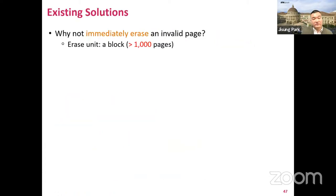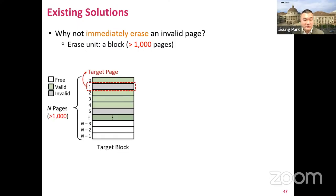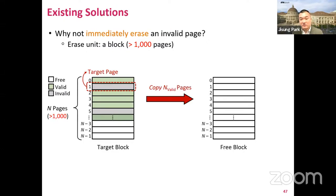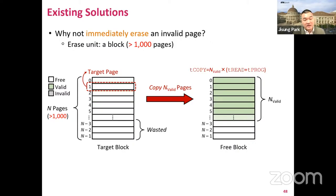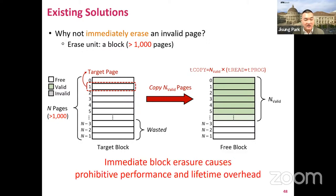The most intuitive way to prevent such data recovery attacks is to immediately erase an invalid page. However, the erase unit of NAND flash memory is a block which contains more than a thousand pages these days. So to erase a target page, we should first move all the valid pages in the corresponding block to another block, which causes significant performance overhead, especially when the target block has many valid pages. Also, if the target block has some free pages, they must be erased without being programmed, wasting PE cycles. Immediate block erasure is hard to use in practice due to its prohibitive performance and lifetime overheads.